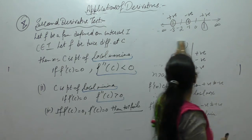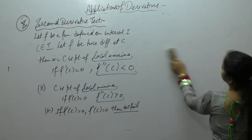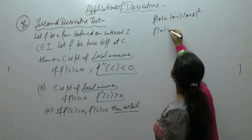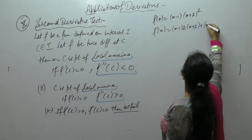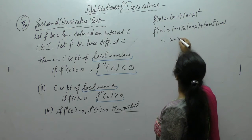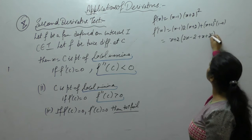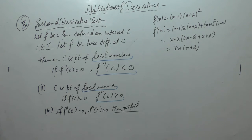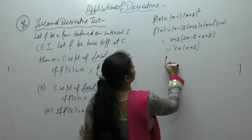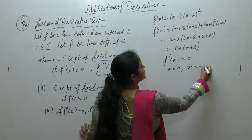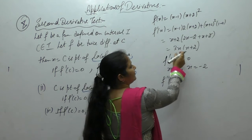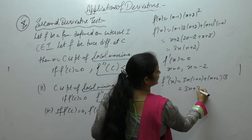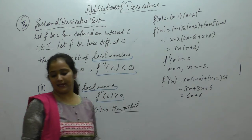Let us check using the second derivative for Example 2. f(x) = (x-1)(x+2)², f'(x) = (x+2)(3x). Critical points are x = 0 and x = -2. Now find f''(x) using the product rule: f''(x) = 3x·(1) + (x+2)·3 + ... simplifying gives f''(x) = 6x + 6.